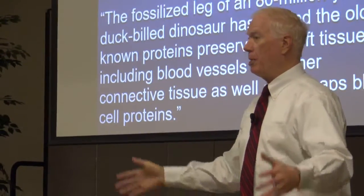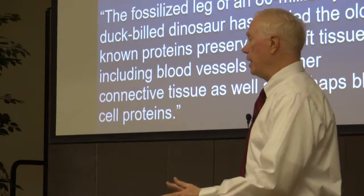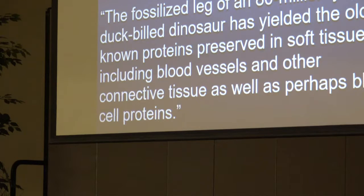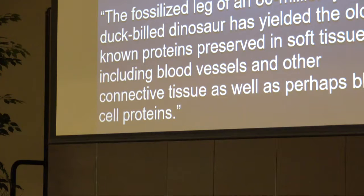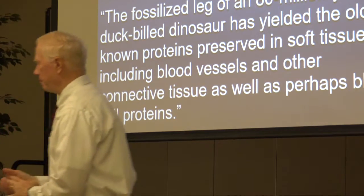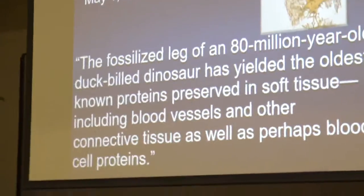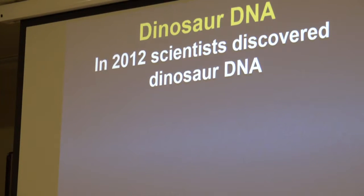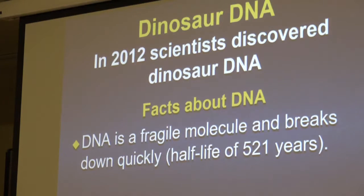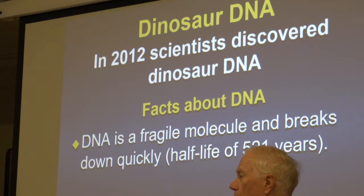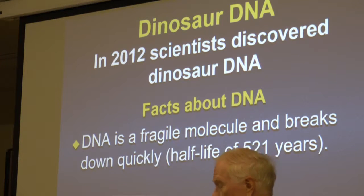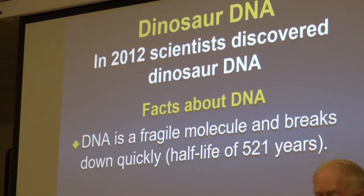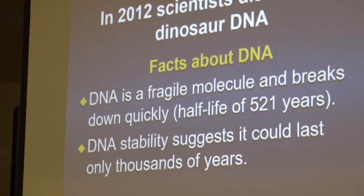In 2012 they discovered DNA still in the dinosaur tissue. The half-life of DNA is about 521 years — every 521 years when something's dead, half the DNA is decomposed. Could that be 65 million years old? Absolutely not. That suggests only thousands of years, not millions. That completely goes against evolution. All the science is now going against evolution. The question is, why don't we see this in public schools? Science that does not agree with evolution is censored out of the textbooks.